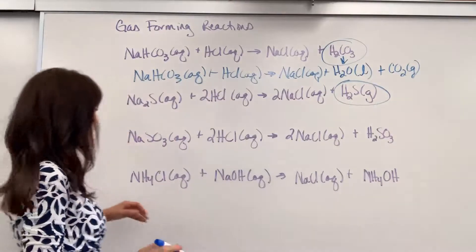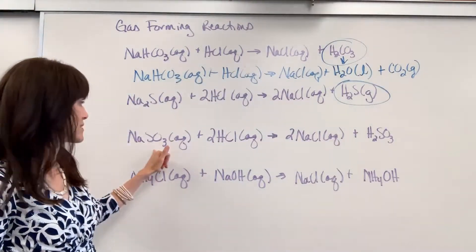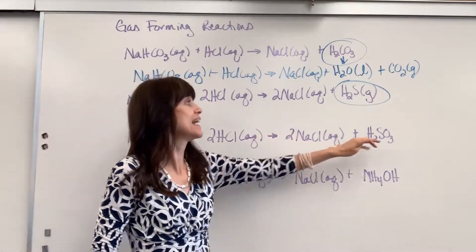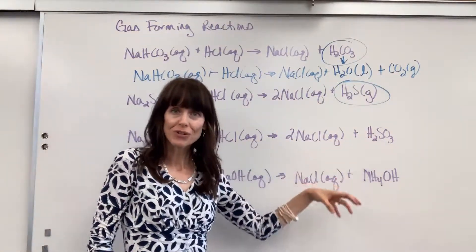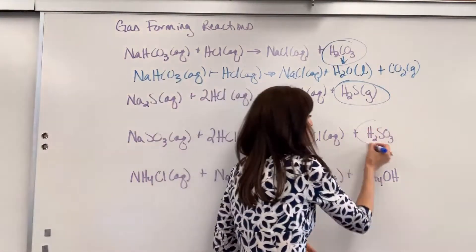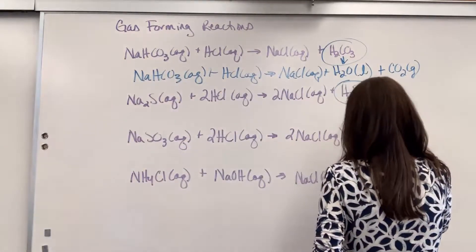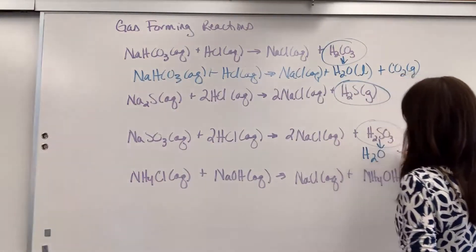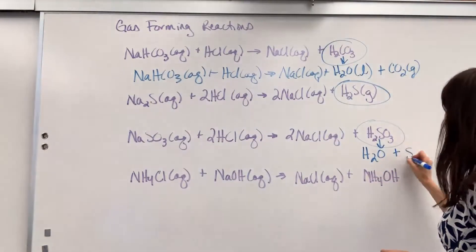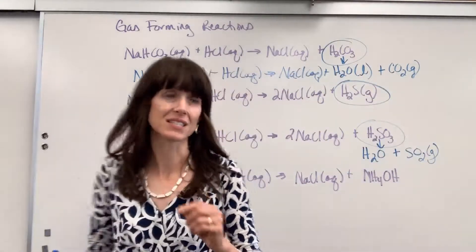Third one. I have a sodium sulfite, so SO3 2 minus, plus hydrochloric acid produces our sodium chloride and sulfurous acid, H2SO3. Here's what you're memorizing. That H2SO3 is going to produce H2O plus sulfur dioxide, SO2. And there's your gas. There's your gas is the SO2. And of course, the water gets the liquid.